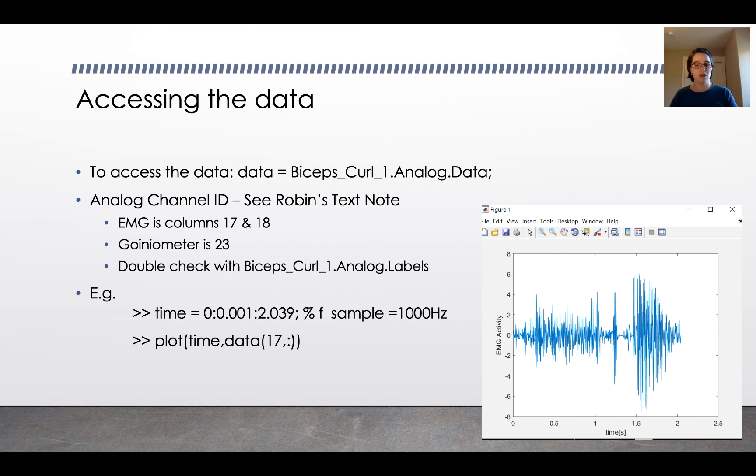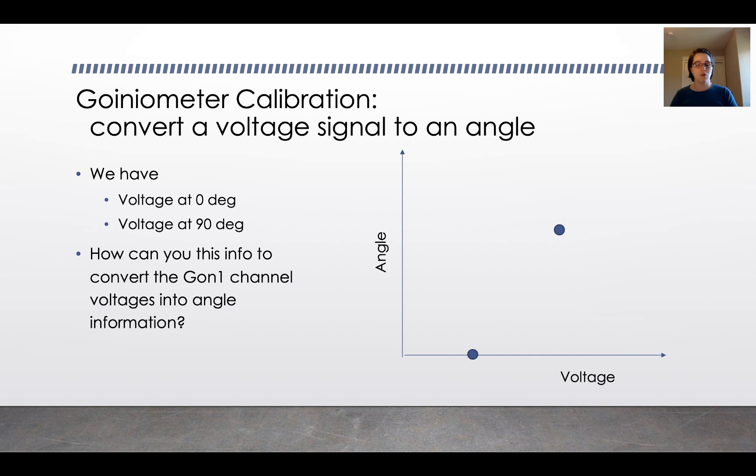So if you do that, you should get a plot of EMG activity that looks like what's shown here, plotted versus time. And finally, you're going to want eventually to plot your voltage data for the EMG versus the angle of the goniometer. So you have two data points, voltage at zero degrees and voltage at 90 degrees. One of the challenges you're going to have this week is to figure out how to use that information to convert your voltage information for the angle channels into an angle measurement so that you can graph the EMG voltage on the vertical axis and the angle on the horizontal axis. EMG is a function of angle for contraction.